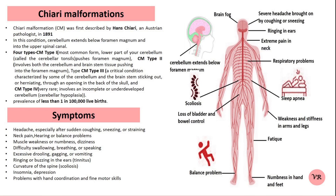The exact causes of Chiari malformation are not clearly understood, but several factors are believed to contribute to the development of the condition. Broadly, the causes can be categorized into genetic and environmental factors. Chiari malformation, particularly Type 1, can sometimes run in families. If a person has a family member with Chiari malformation, there may be a higher chance of developing it.